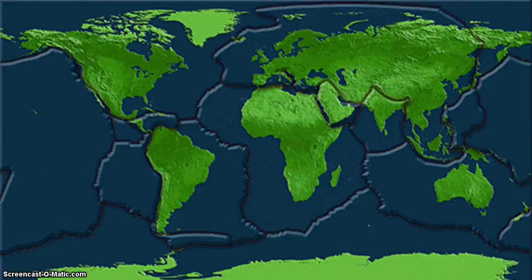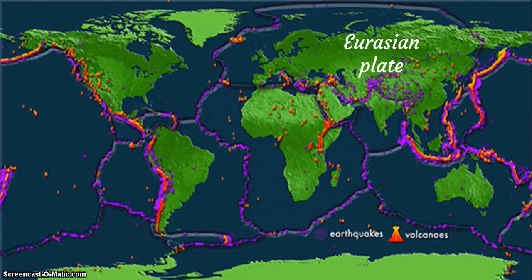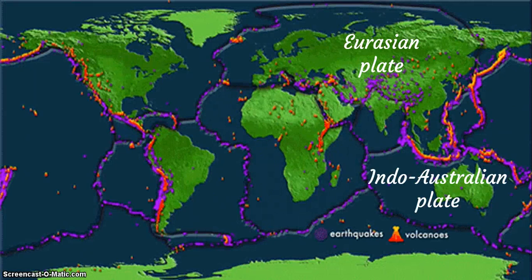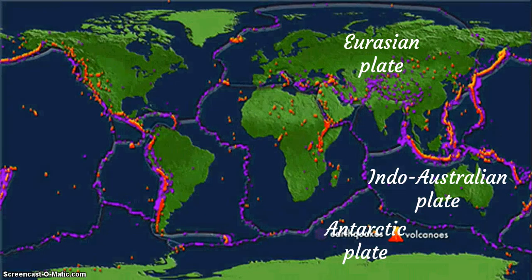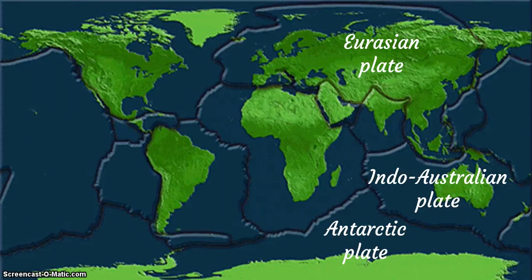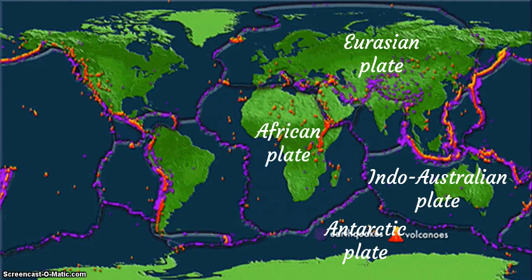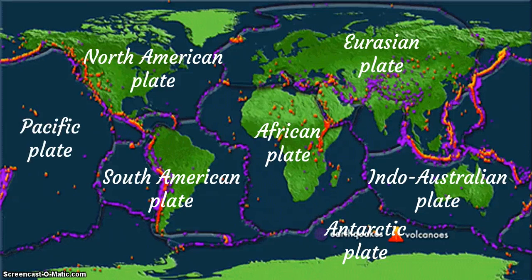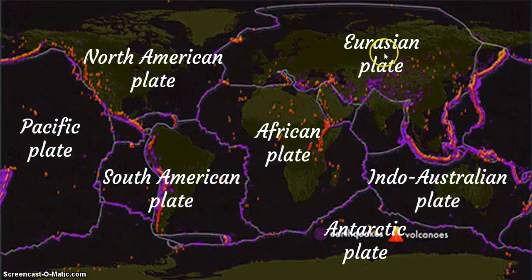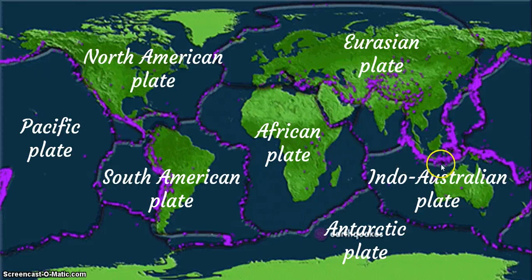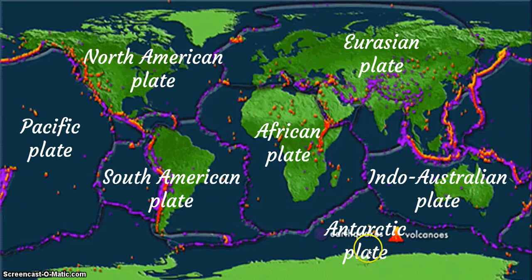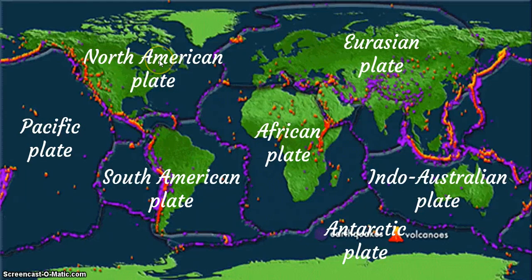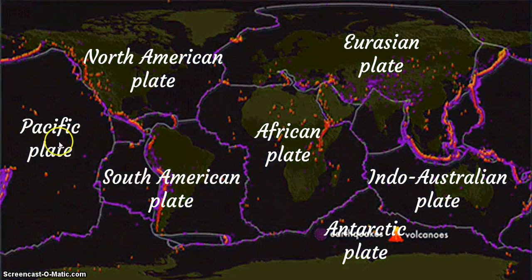The seven major tectonic plates are: the Eurasian plates, the Indo-Australian plates, the Antarctic plates, the African plates, the North American plates, the South American plates, and the Pacific plates.